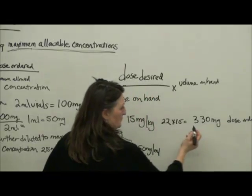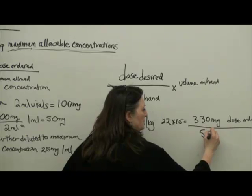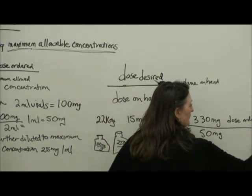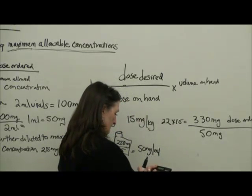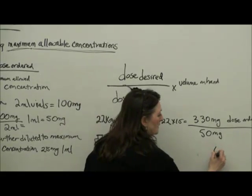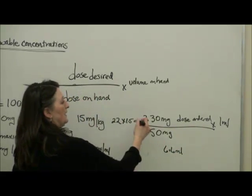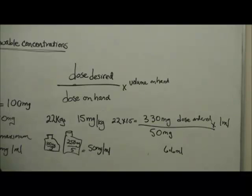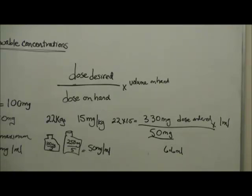So our dose ordered is 330, dose on hand we have 50 milligrams in one milliliter. So we need to draw up 6.6 milliliters of Fosphenytoin will be 330 milligrams. But we look and we see this is 50 milligrams per milliliter, and it's a drug that says it has to be no more than 25 milligrams per milliliter.